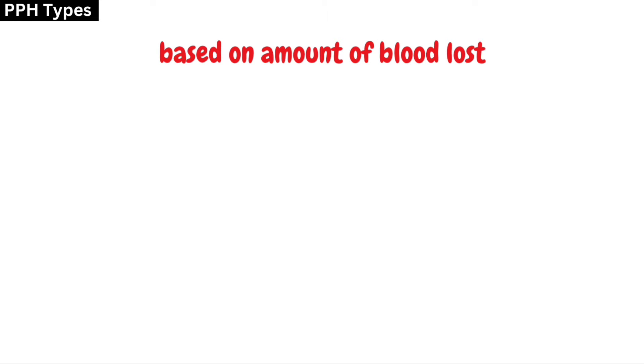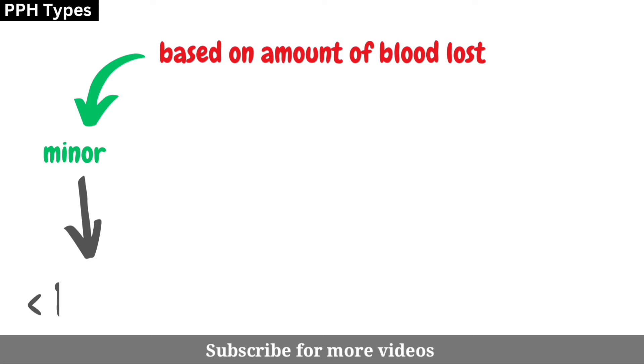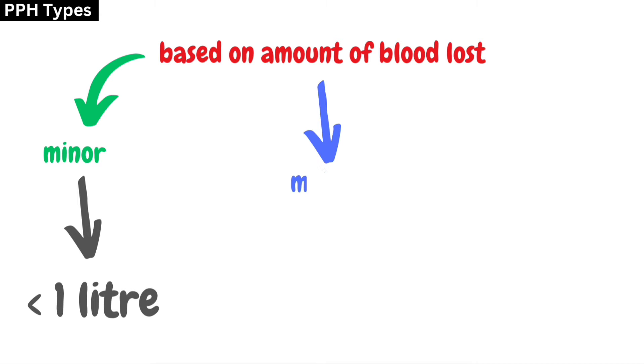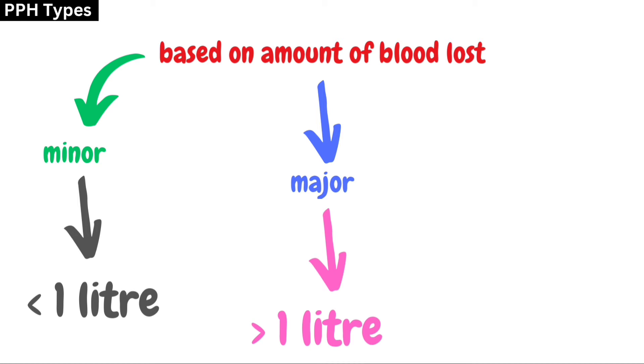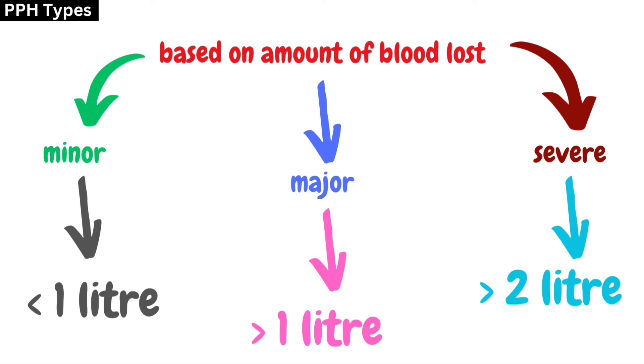The types of PPH based on the amount of blood loss are: minor PPH with blood loss of less than one liter, major PPH with blood loss of more than one liter, and severe PPH with blood loss of more than two liters.